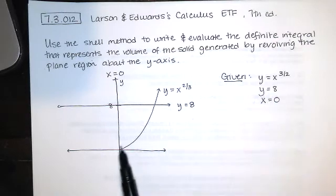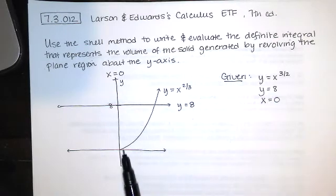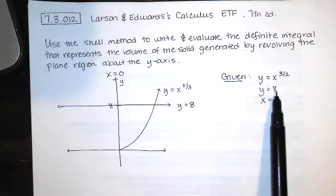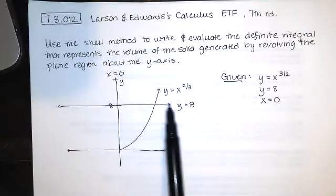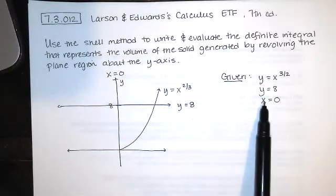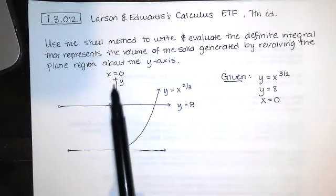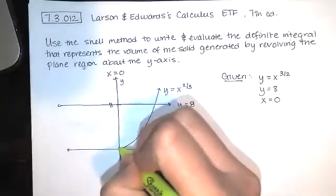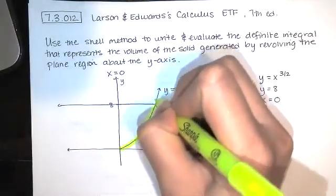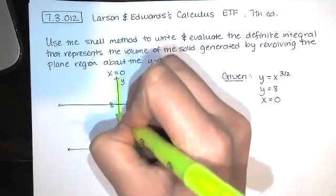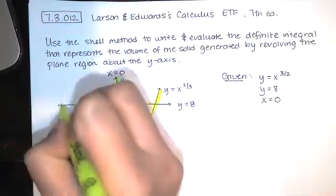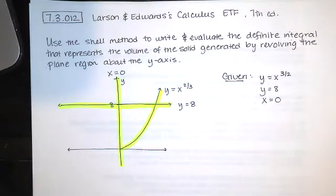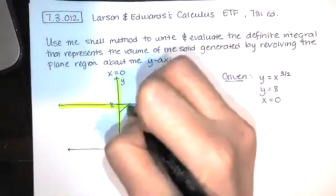So we want to sketch that curve. It looks like this. And we also want to sketch the curve y equals 8. Y equals 8 looks like this. And then x equals 0. Remember that's the same as the y-axis. That's that right there. So when I put these three pieces together, those three form the bounds of my region. So this is the region that we're starting with.